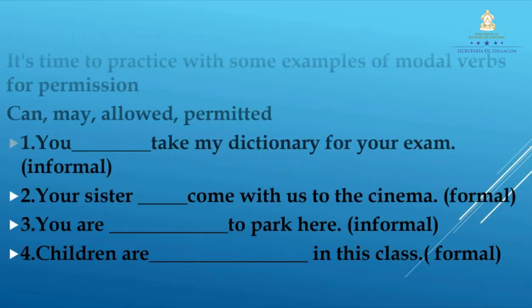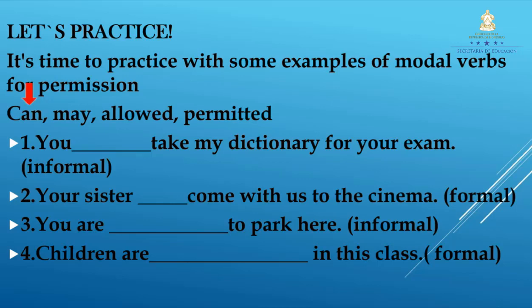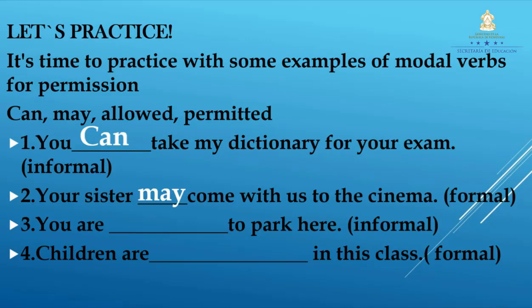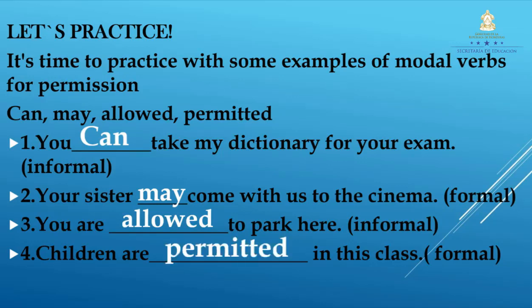Now it's time to practice. Vamos a practicar con algunos ejemplos de los verbos modales que nos ayudan a pedir y a otorgar permiso: can, may, allow, and permit. Number one: '_____ take my dictionary for your exam' (informal). The correct answer is 'can.' You can take my dictionary for your exam. Number two: 'Your sister _____ come with us to the cinema' (formal). The answer is 'may.' Your sister may come with us to the cinema. Number three: 'You are _____ to park here' (informal). The correct answer is 'allowed.' You are allowed to park here. Number four: 'Children are _____ in this class' (formal). The answer is 'permitted.' Children are permitted in this class. Los niños están permitidos en esta clase.